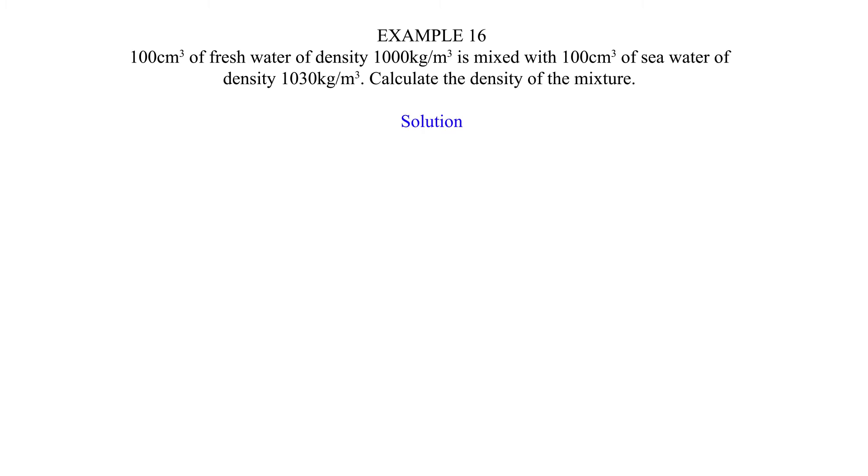Solution: Mass of fresh water equals density times volume equals 1 gram per cubic centimeter times 100 cubic centimeters equals 100 grams. Mass of sea water equals 1.03 times 100 equals 103 grams.